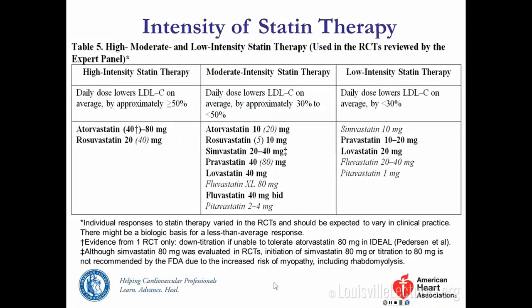For high-intensity statin therapy, either 40–80 mg of atorvastatin or 20–40 mg of rosuvastatin — these drugs are known to give greater than 50% reduction in LDL. For moderate-intensity statin therapy, lower doses or drugs such as simvastatin or pravastatin are used. For low-intensity therapy, much lower doses can be used. Most statins are now generic and not expensive. Rosuvastatin is probably the only one still brand name, making it straightforward to get generics approved by insurance.